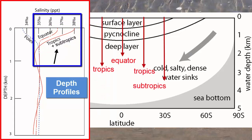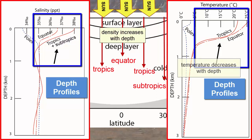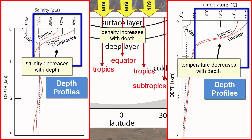At the equator and tropics, the pycnocline is well developed. Surface waters are heated up by strong direct sunlight and become quite warm. Even though surface waters at subtropical highs have higher than average salinity due to high evaporation rates, these waters are still so warm that they end up being less dense than the deep polar water beneath them. So in the subtropics and equator, depth profiles show that with depth, density increases, temperature decreases, and salinity decreases — either a little or a lot depending on whether you're at the equator or the saltier subtropics.